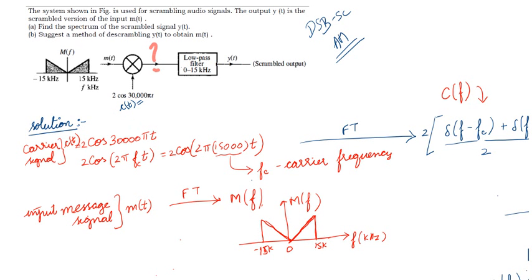We start with the carrier signal c(t) = 2cos(30000πt). We can write 30000π = 2π·f_c, so 30000 = 2·f_c, which gives us f_c = 15000 Hz. So the carrier frequency is 15000 Hz (15 kHz).